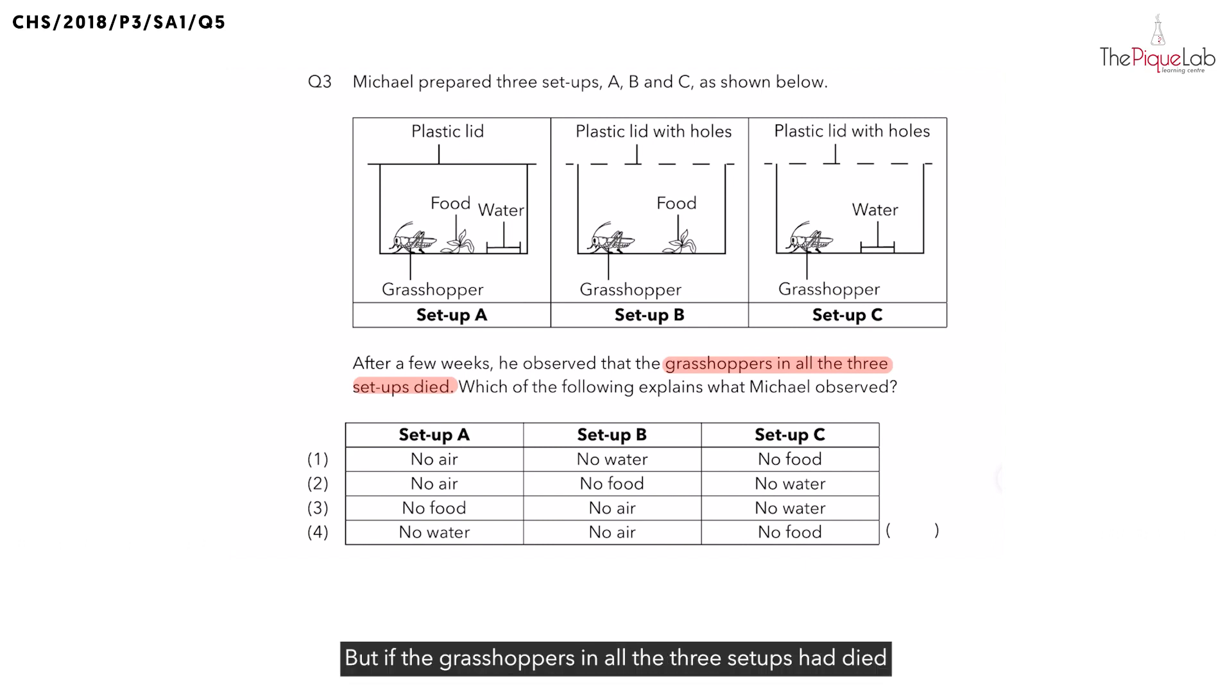But, if the grasshoppers in all the 3 setups had died, this means, did they have air, food or water? No. So, let's try this out. We know that they did not have either air or food or water. So, let's figure out what did the grasshopper in each of the setups were missing.